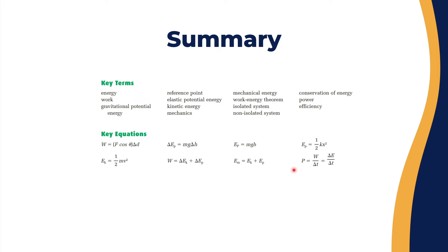Gravitational potential energy. The key equations we use: work equals F cosine theta delta d, and delta E potential.